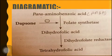To summarize diagrammatically: normally, in the presence of folate synthetase, dihydrofolic acid is formed, which in the presence of dihydrofolate reductase leads to cell growth and bacterial multiplication. But with Dapsone, folate synthetase is inhibited, dihydrofolic acid is not formed, and therefore cell growth of the bacteria stops and the disease is halted.